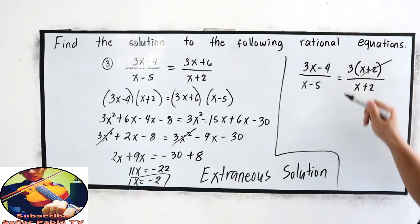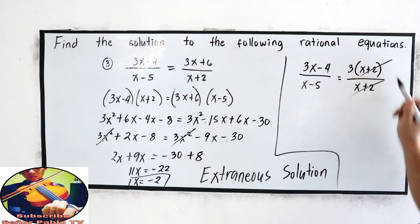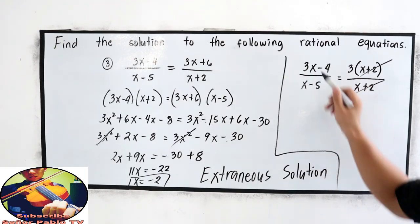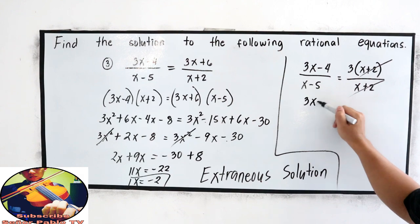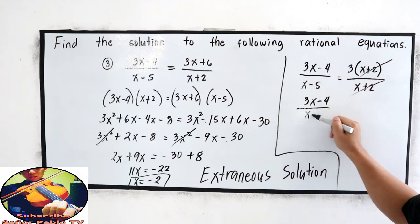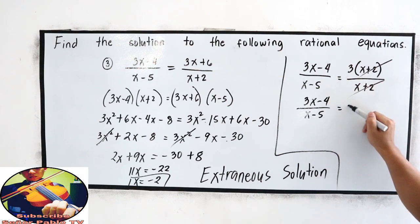Now, we can cancel x plus 2 and x plus 2. The remaining is 3x minus 4 all over x minus 5 is equal to 3.